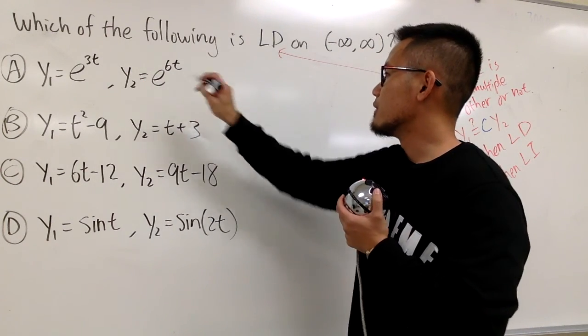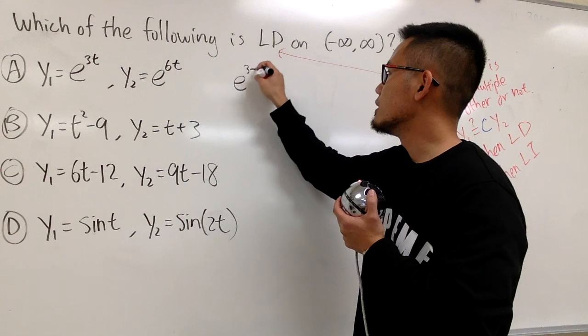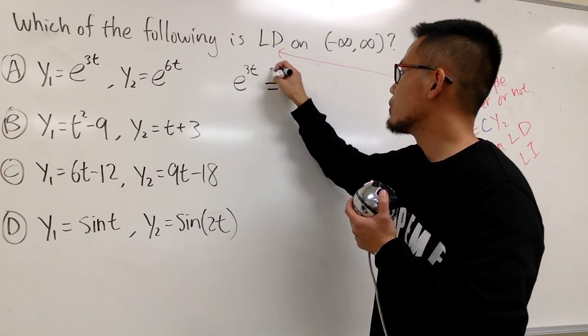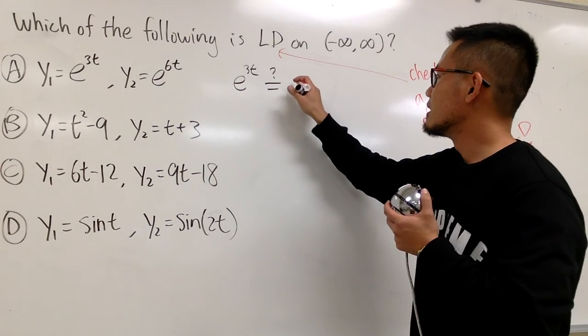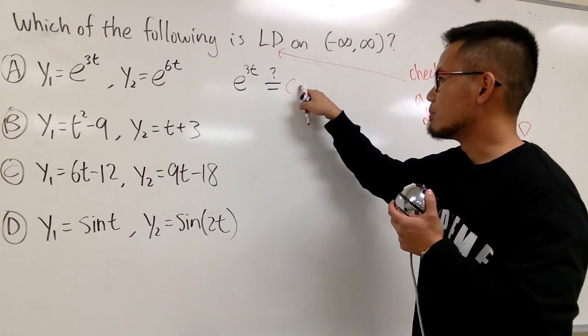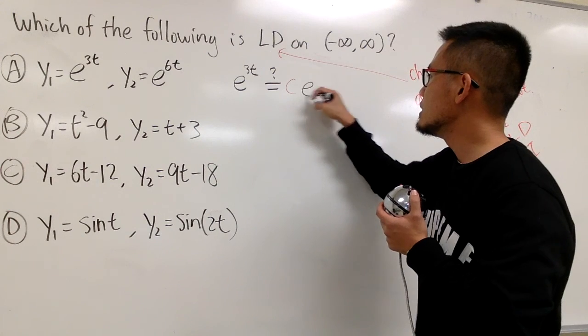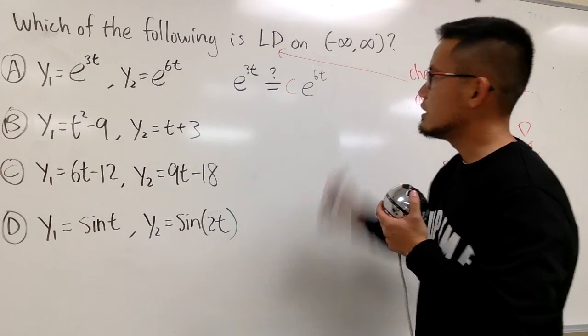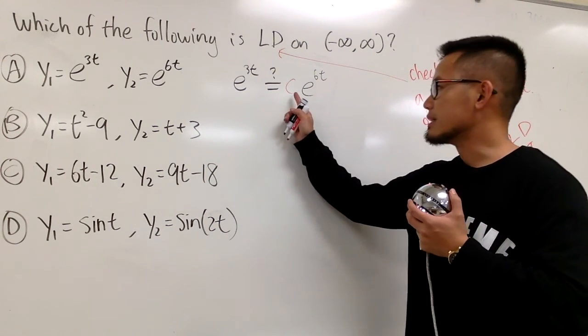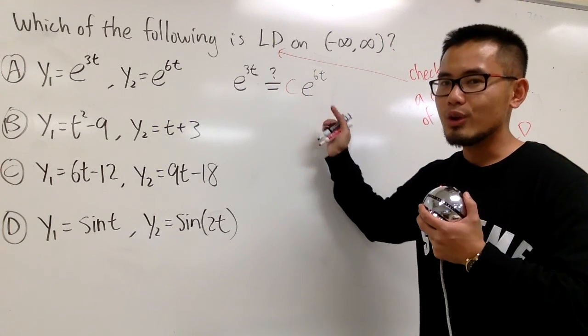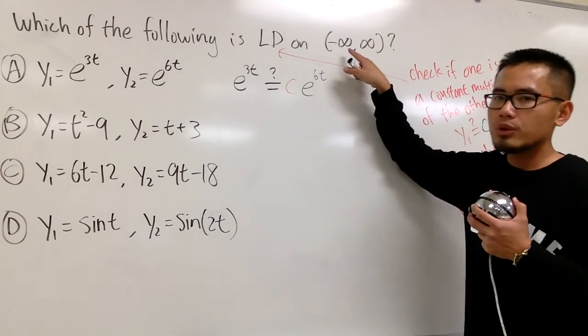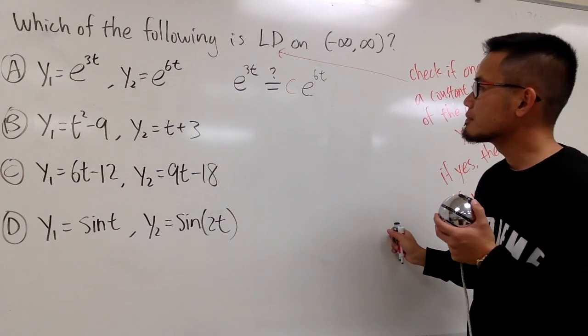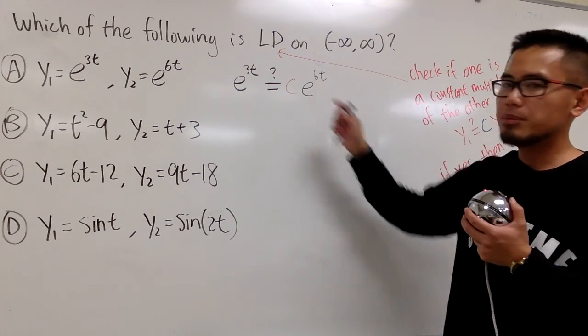I'm going to first put down the first function, y₁, which is e to the 3t. And I'm going to make this equal to, hopefully, so that's why I put down a question mark. Can I make this equal to c, a constant multiple, with the second function, which is e to the 6t? Can I pick a c value to make this true for all values of t? Because right here, it specifies that we want to get from negative infinity to positive infinity, right?